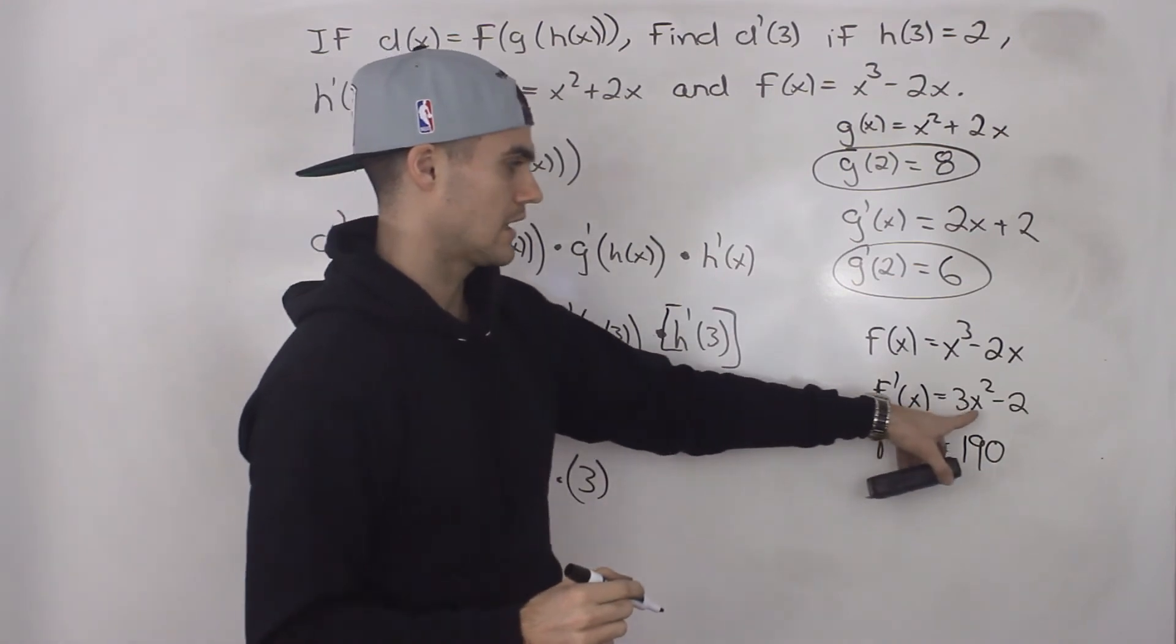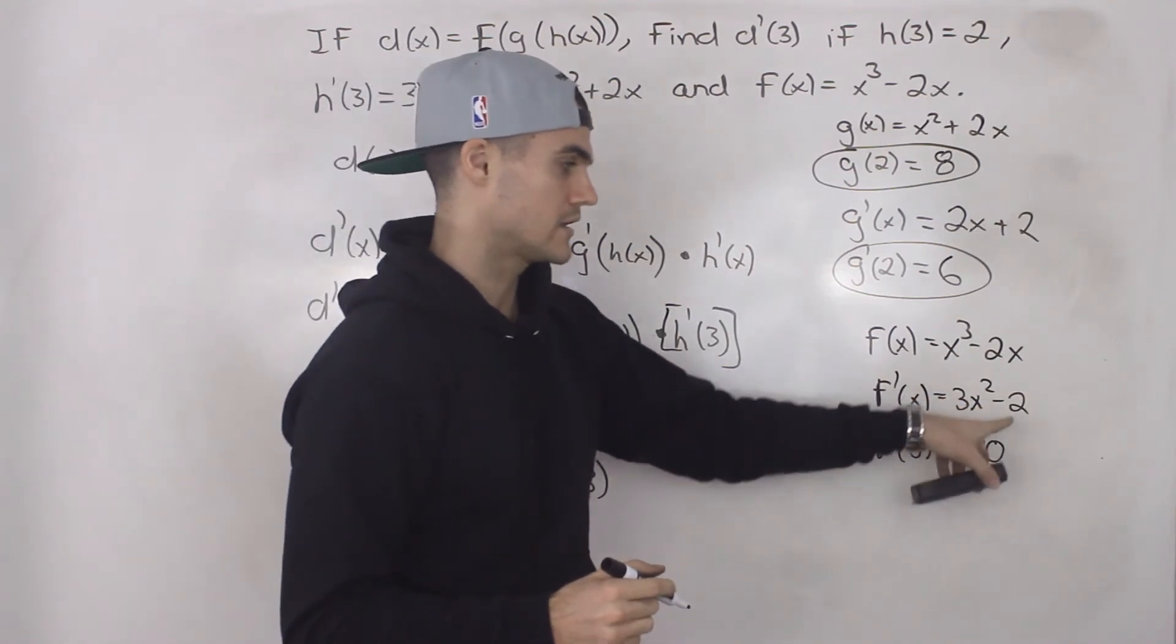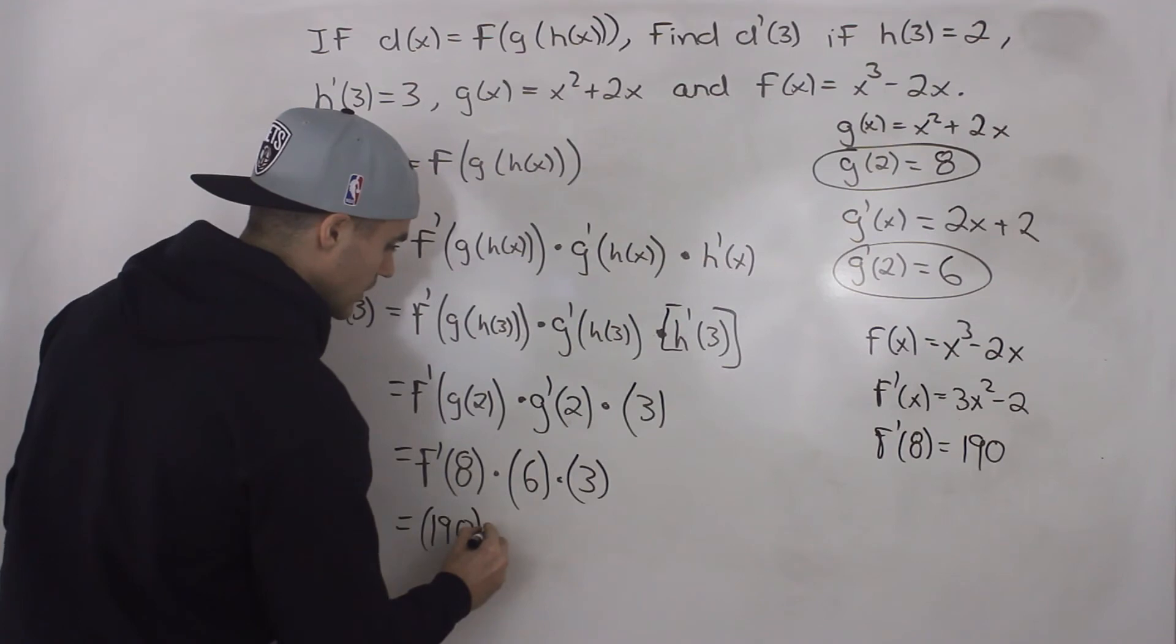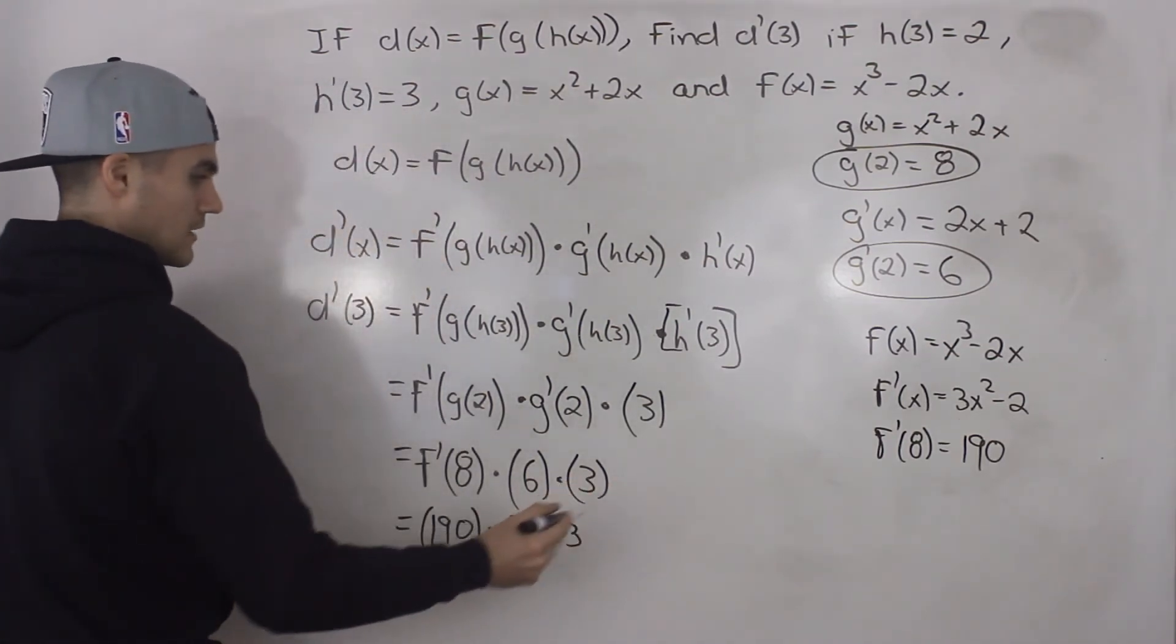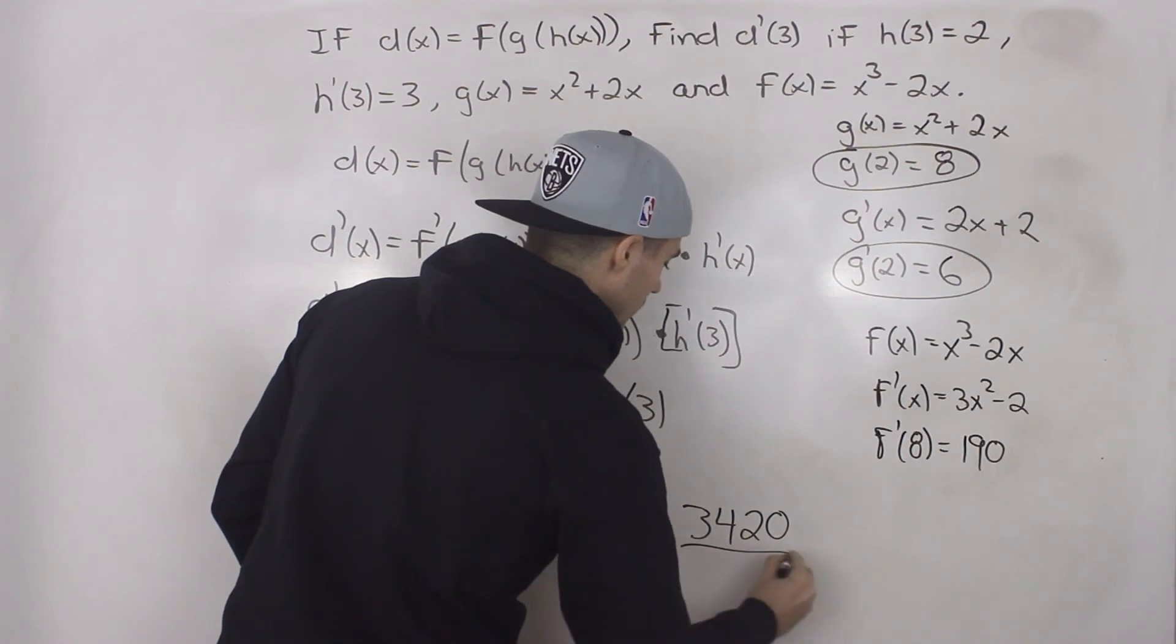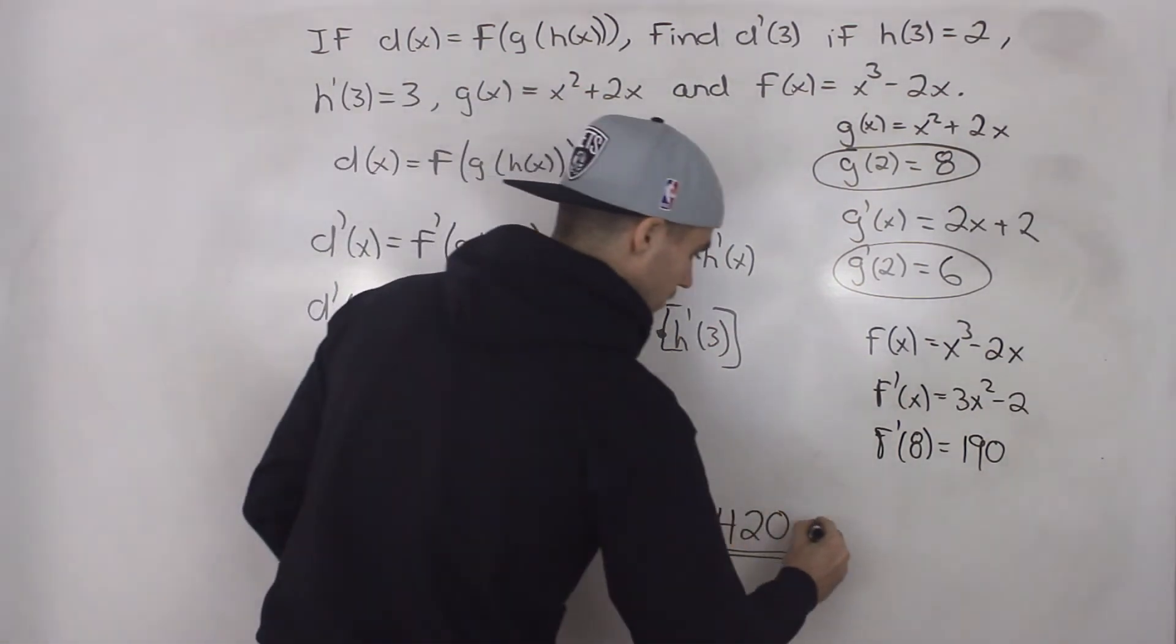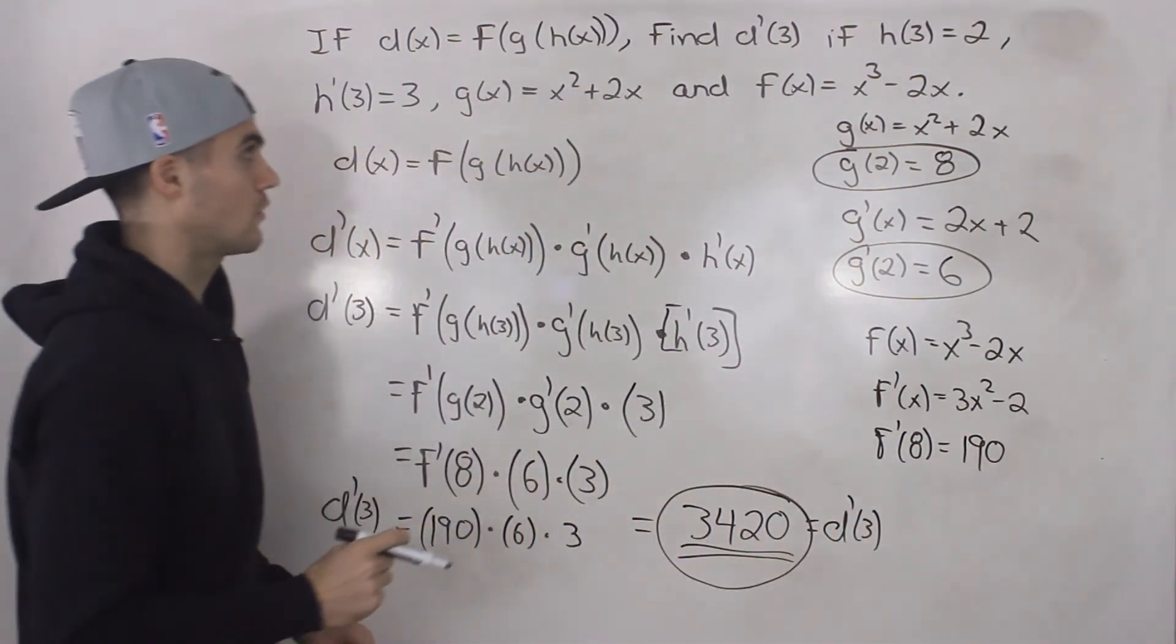Right? So we plugged in an x value of 8, 8 squared 64 times 3, 192 minus 2, 190. So instead of writing f prime 8 here, we can now just simply write 190. So we'll have 190 times 6 times 3. And when you multiply those numbers, you end up getting 3,420. So that there is the answer for d prime 3. Let's actually write it over here. Right? That's your final answer right there. 3,420.